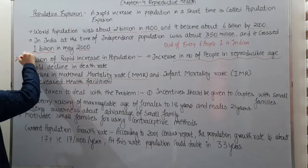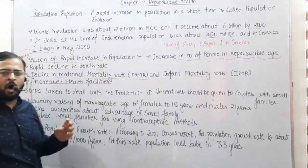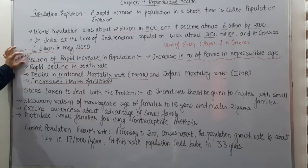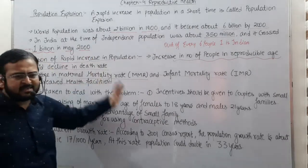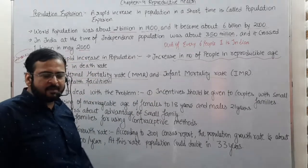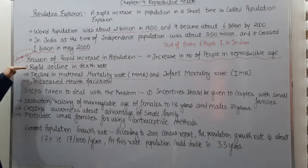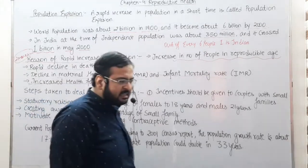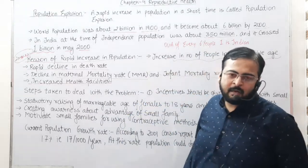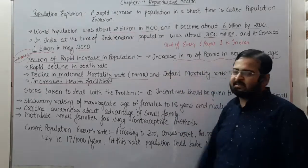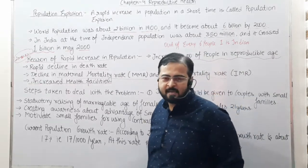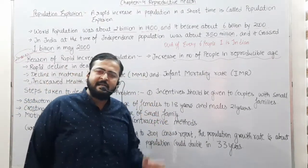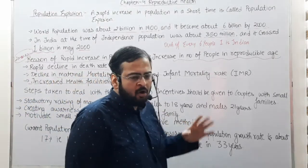This question can come for two marks in the board exam: 'What is the reason for decline in death rate?' — Answer: increased health facilities. And if the question is 'What is the reason for increase in population?', the four points are: (1) increase in number of people in reproductive age, (2) rapid decline in death rate, (3) decline in MMR and IMR, (4) increased health facilities. Always follow NCERT points.